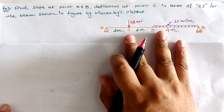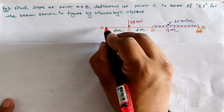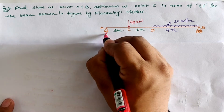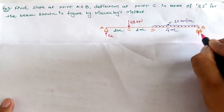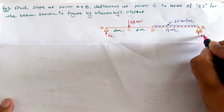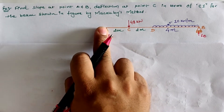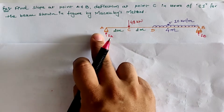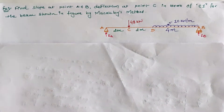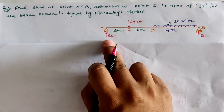For the simply supported beam, we first have to calculate the support reactions. At a hinge support there is one vertical reaction and one horizontal reaction; at a roller support there is one vertical reaction. Since there is no horizontal or inclined loading, the horizontal reaction H is zero.